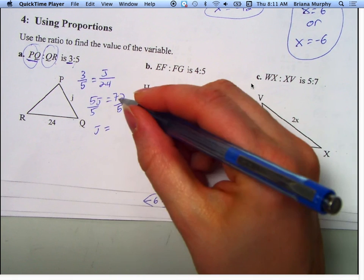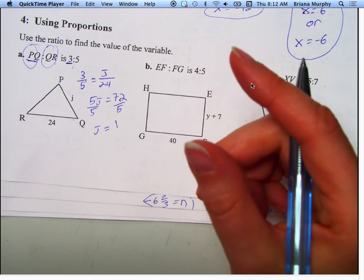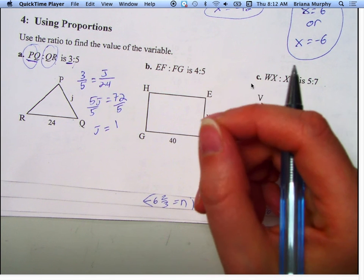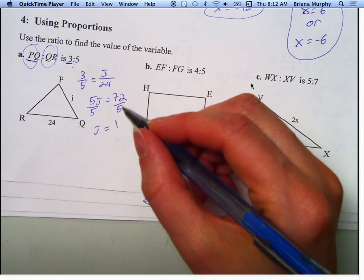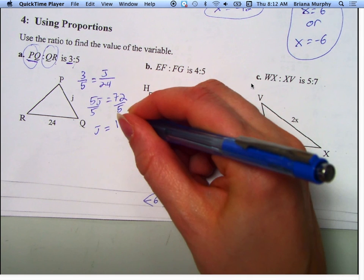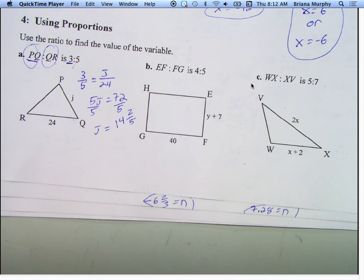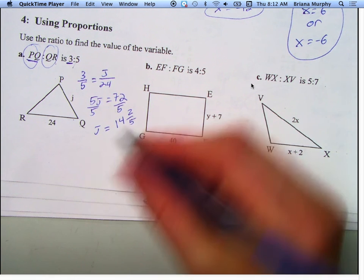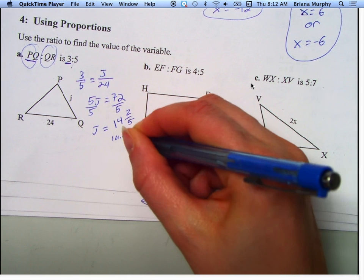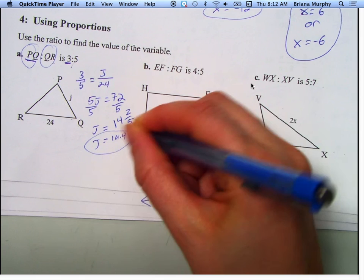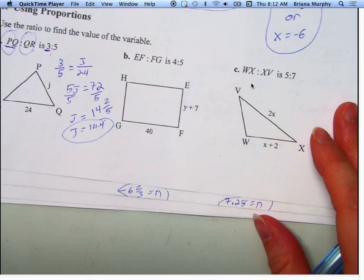5 goes into 7 one time with 2 left over. Right? 5 goes into 22 four times with 2 left over. So 14 and 2 fifths. Yeah, so you just go 72 divided by 5. You get 14.4. Same thing. Either way.